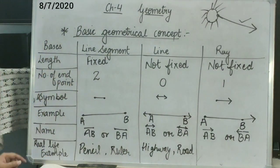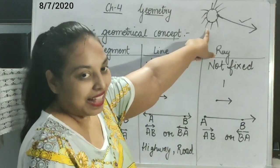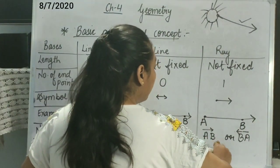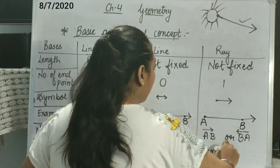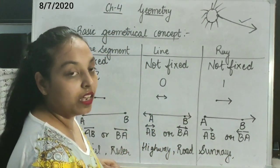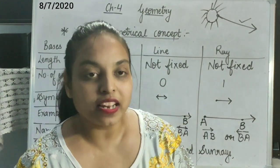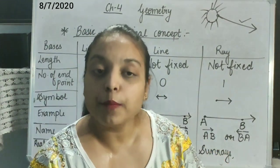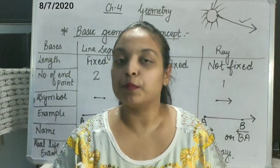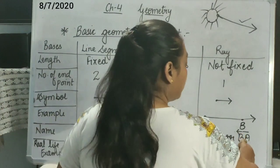Now, can you think of real-life examples? One I have given already — that is sun rays. The first is sun rays, and the second is torch light, because the starting point of the torch light is the torch, but the end point is nothing. It can move wherever it gets space to go. So the second example is torch light.